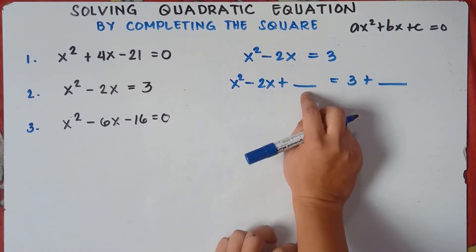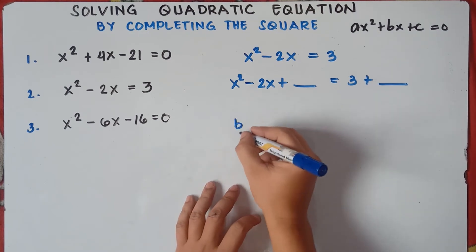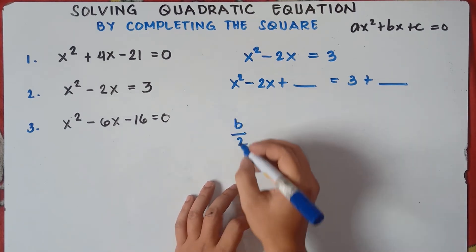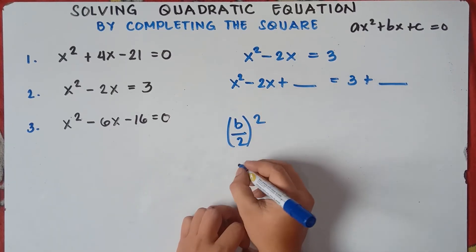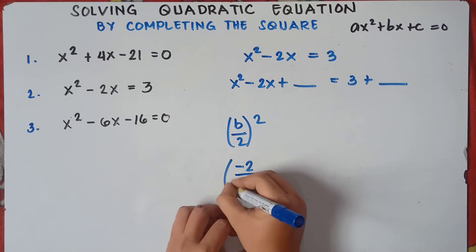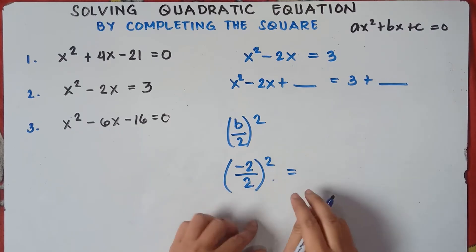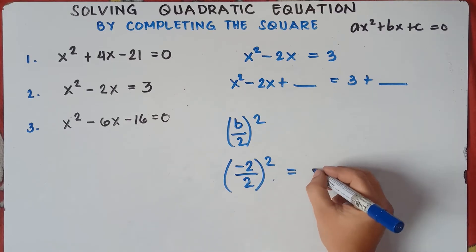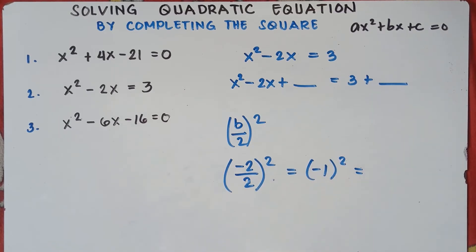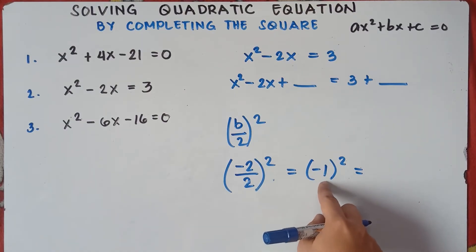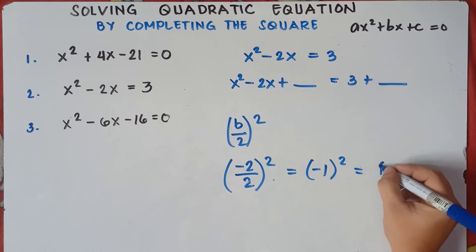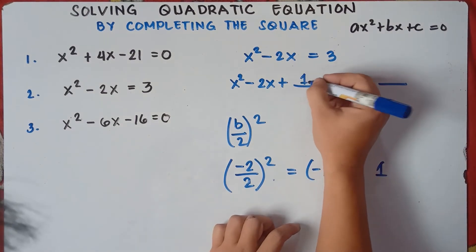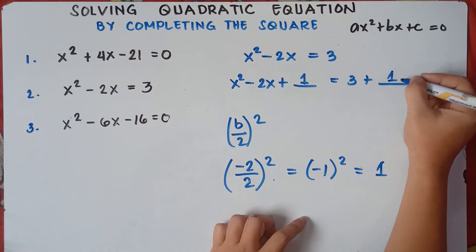We will use the formula b over 2, quantity squared, to find the new constant. Our b is negative 2, since it's the coefficient beside x. So negative 2 divided by 2 is negative 1, quantity squared — negative 1 times negative 1 is positive 1. Therefore, we add 1 on the left side and also add 1 on the right side.